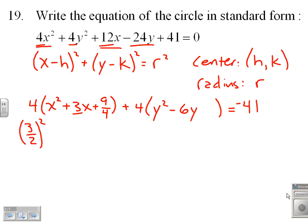We'll come back to that 9 fourths in just a moment. Likewise, for the y's, I need to take my negative 6 term, divide that by 2, and square that. That gives me negative 3 squared, positive 9, so I put in a plus 9.